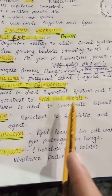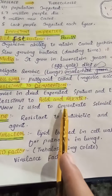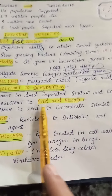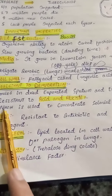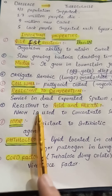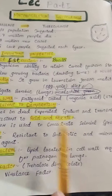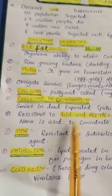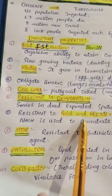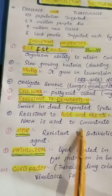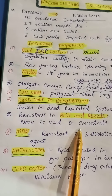Now, with Mycobacterium tuberculosis, what we do is add NaOH — sodium hydroxide — to concentrate the clinical specimen. To concentrate the specimen, this NaOH will inhibit the growth of other organisms.